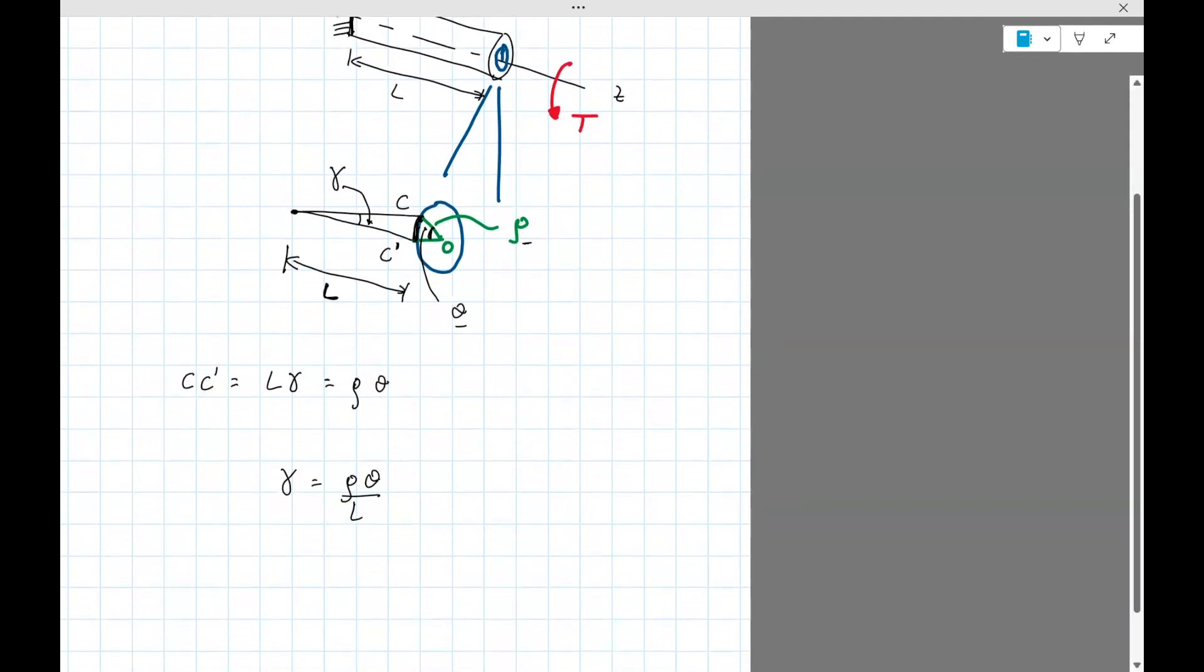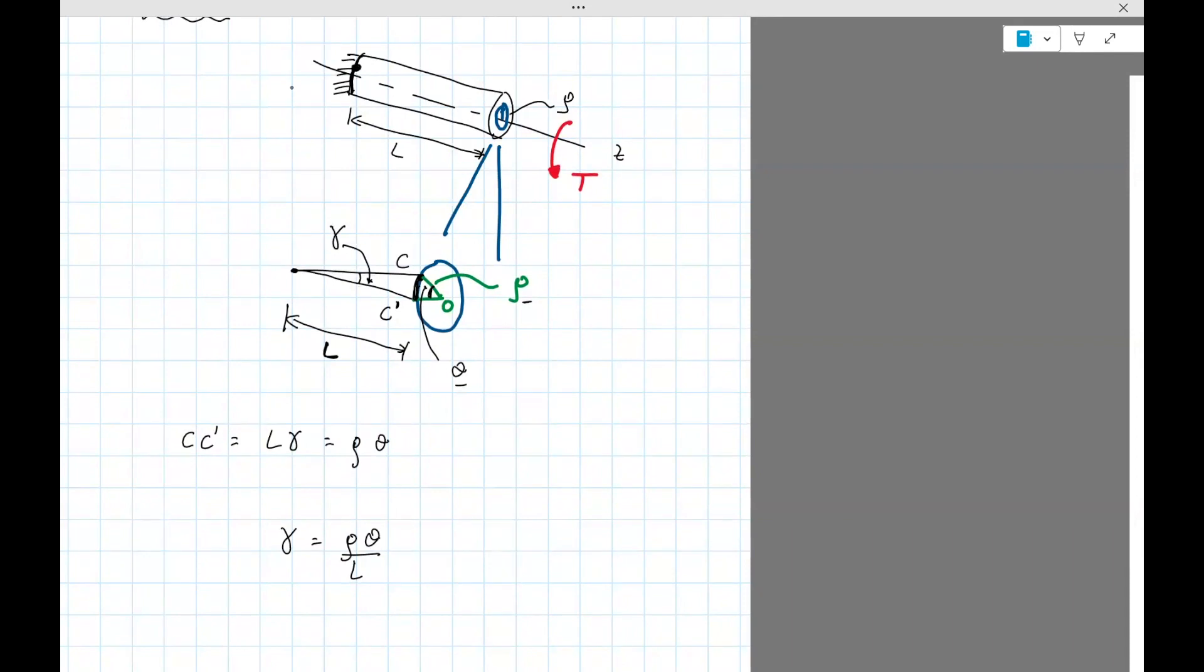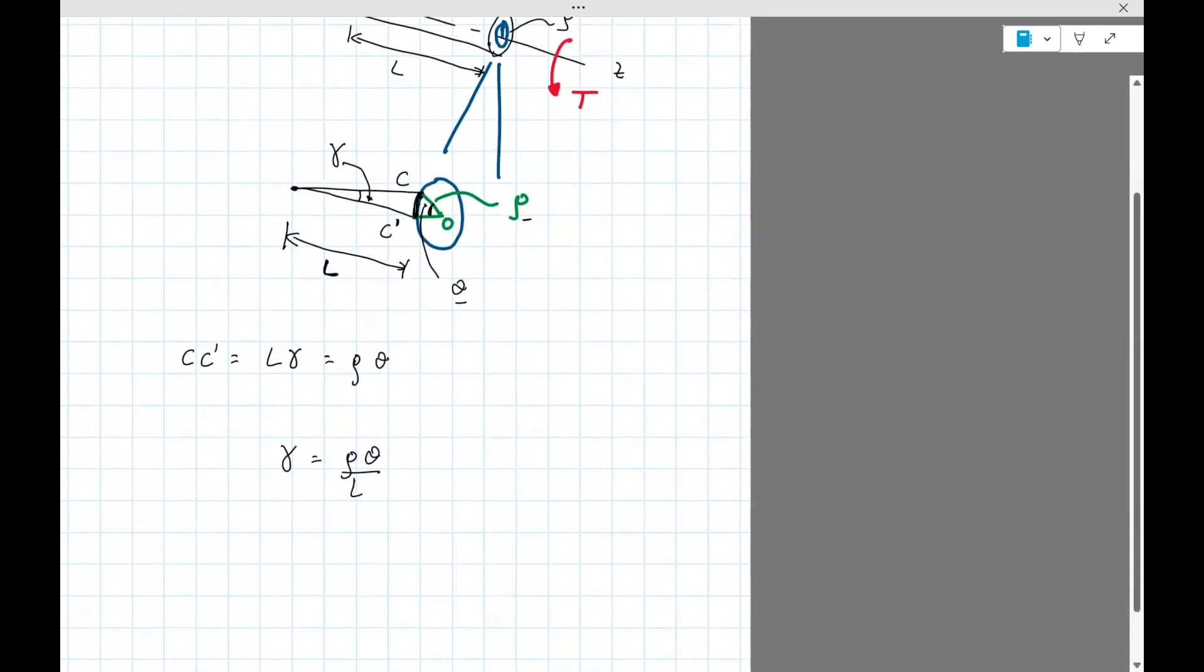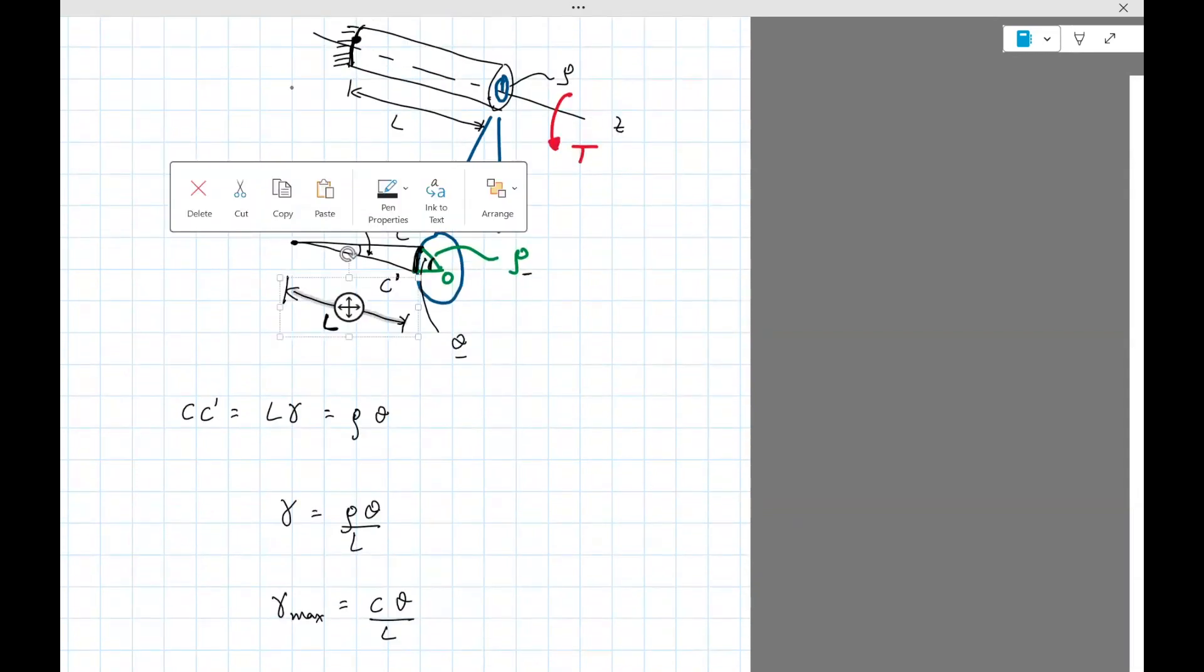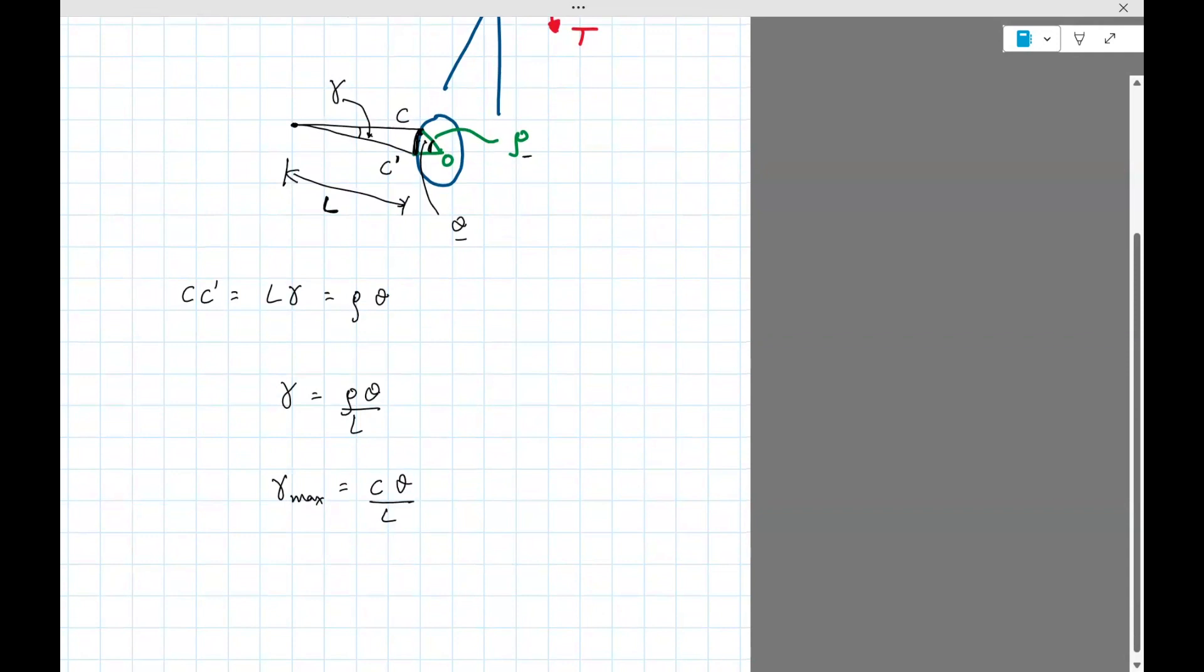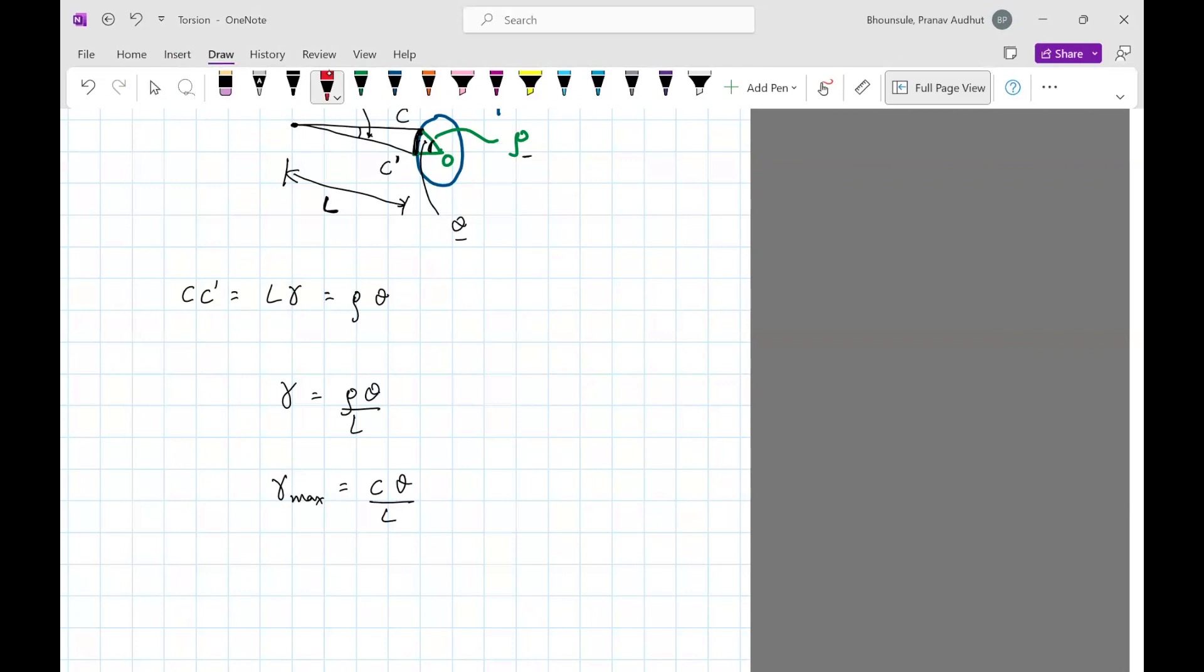Okay, now remember rho is some radius. But if the true radius is C, that is the point from O right the way to the circumference, then clearly this rho is proportional to theta. Sorry, gamma is proportional to rho. And so if you want the maximum gamma, then that will be C theta divided by L, where C is the circumference, the radius. Again, rho is radius of some sections. So that's something we need to remember. Let's box it.